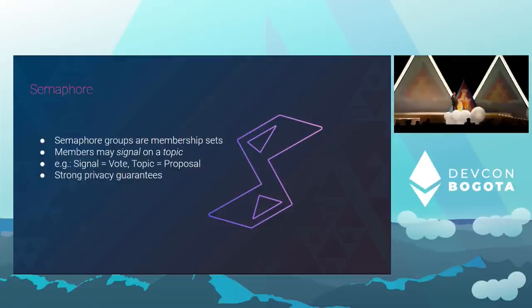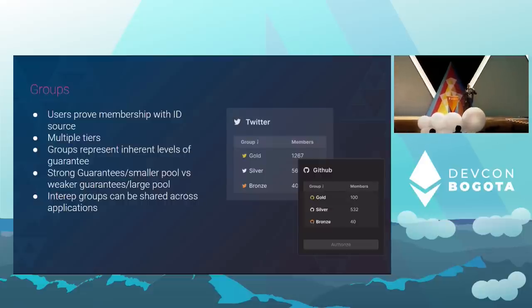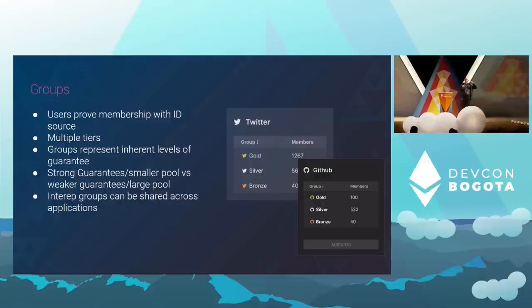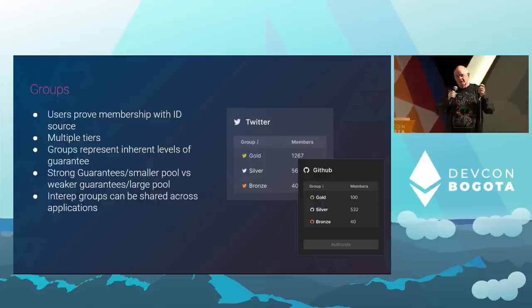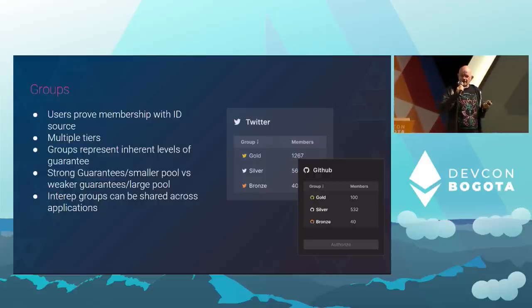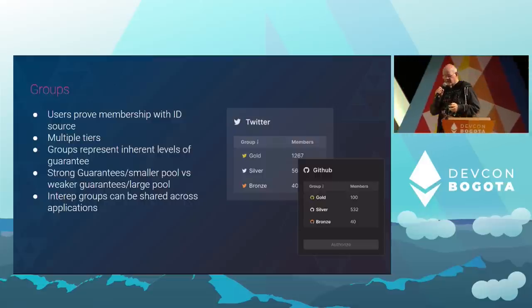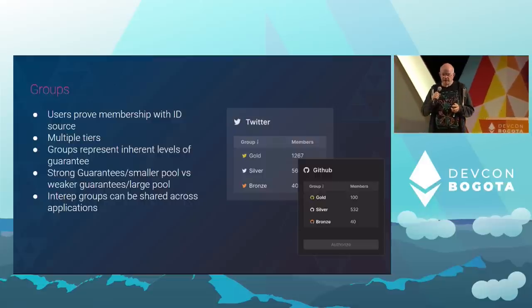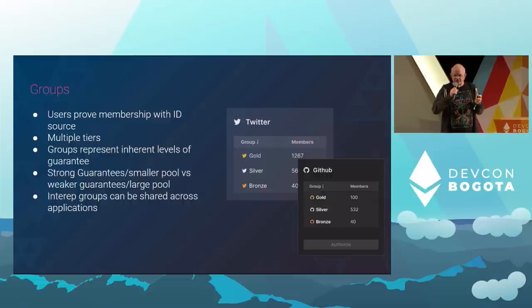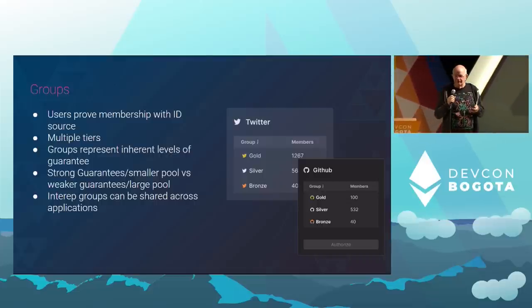The Semaphore framework gets used in lots of ways. Plain vanilla Semaphore has its own group management, but what we do with Interrep is have Semaphore outsource the group management to Interrep. Interrep itself bases its identity groups on, for instance, Twitter membership and GitHub membership and so on.